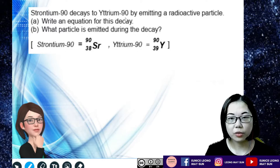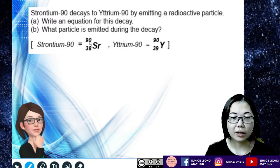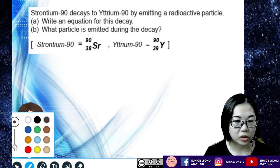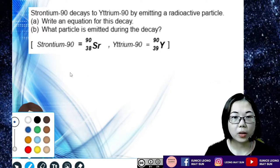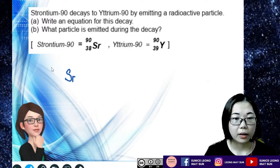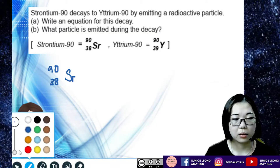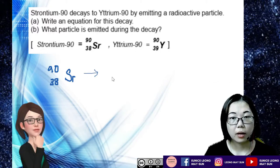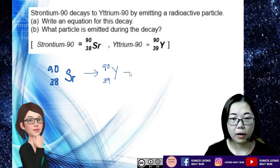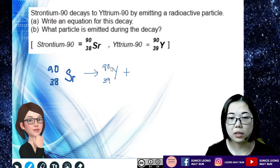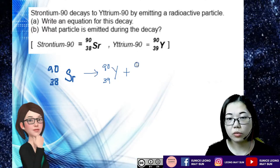Strontium-90 decays to become yttrium-90 by emitting out a radioactive particle. Write an equation for this decay. Before the decay is strontium-90, 38. It becomes yttrium-90, 39. Looking at the nuclear number: before the reaction it's 90, after the reaction it's also 90, so the particle will have a zero nuclear number.